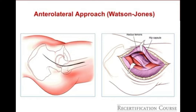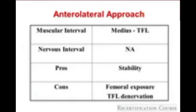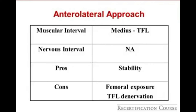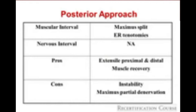The anterolateral approach, or the Watson-Jones approach, involves going anterior to the gluteus medius. There is no internervous interval. The pro is stability, as with all anterior approaches. The downsides include challenging femoral exposure, the tensor fasciae latae can be denervated, and the gluteus medius can also be injured if not done carefully.